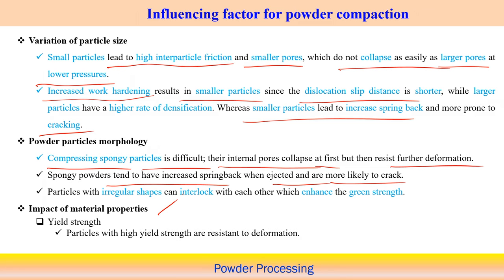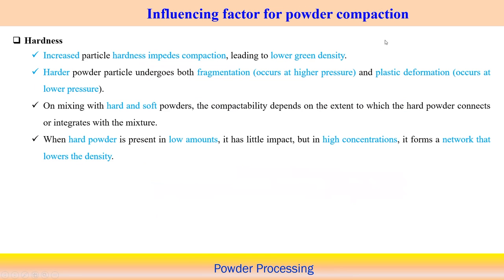Impact of material properties: particles with high yield strength are resistant to deformation. High yield strength resists deformation, and this is the effect of yield strength associated with material properties during powder compaction. Another factor influencing powder compaction is the hardness of the particles.